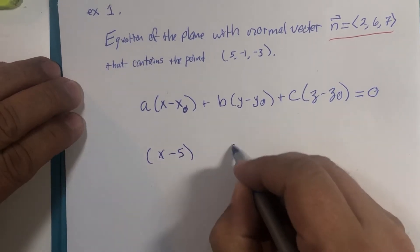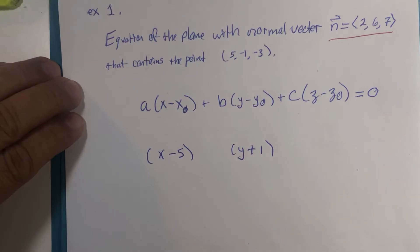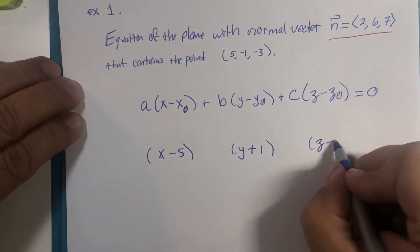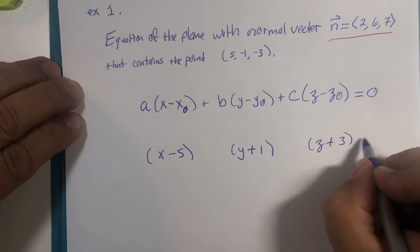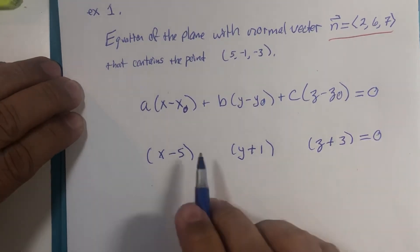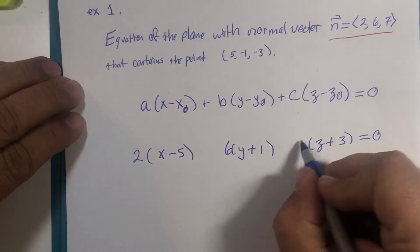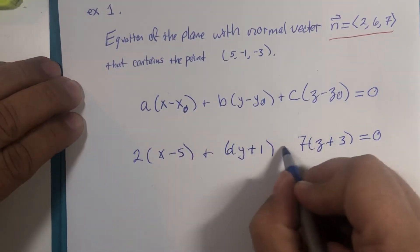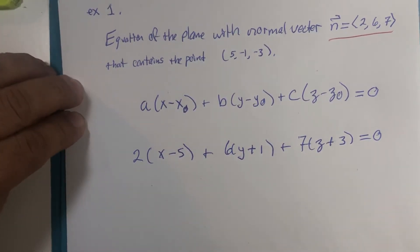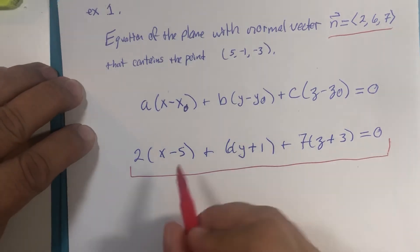For our example, we substitute the given coordinates: (X minus 5), and (Y minus negative 1), which is the same as (Y plus 1), and (Z minus negative 3), which is (Z plus 3), equal to zero. The components of the normal vector are 2, 6, and 7, and these terms are added together in the dot product calculation.